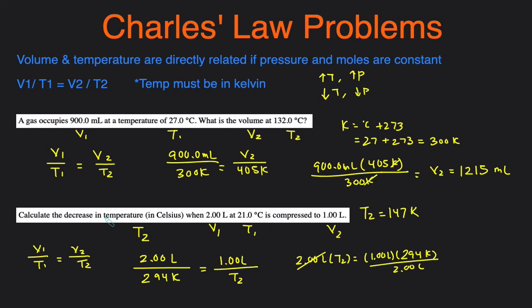So they want us to calculate the change in temperature in degrees Celsius. So let's just convert this back into degrees Celsius. So we would just subtract 273, and then that'll give us negative 126 degrees Celsius. So then whenever you're calculating the change, you want to do final minus initial. So this is the final temperature, negative 126 degrees Celsius, minus 21 degrees Celsius, and it'll be negative 147 degrees Celsius. So that's the decrease in temperature, negative 147 degrees Celsius.